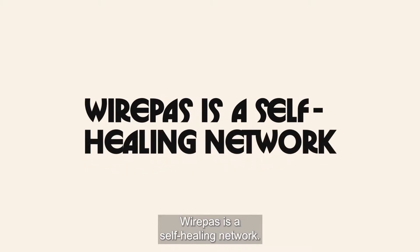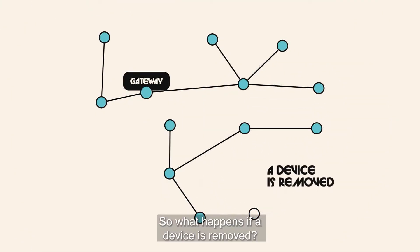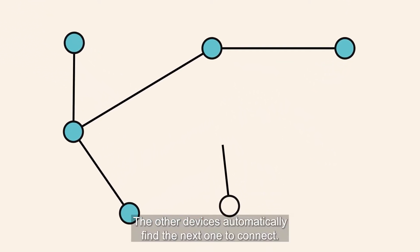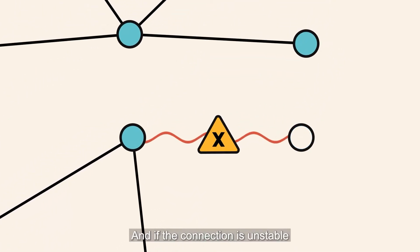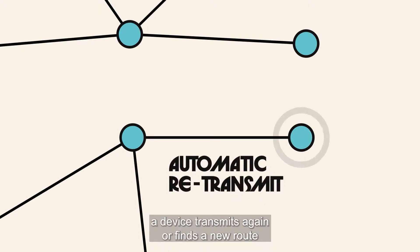Wirepass is a self-healing network. So what happens if a device is removed? No problem—the other devices automatically find the next one to connect. And if the connection is unstable, the device transmits again or finds a new route